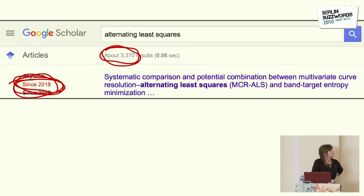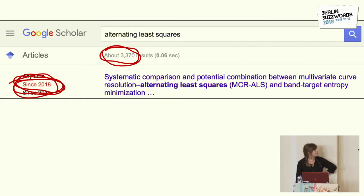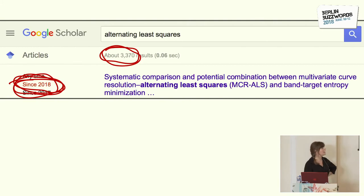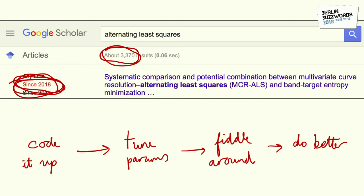In academia, the goal is publications. And in order to get a publication, you've got to do something that no one else has done before. One of the leading algorithms for recommendation engines is alternating least squares. If I do a Google Scholar search for papers on alternating least squares just this year, there's already over 3,300 of them. So doing something new isn't an easy feat. But if I was going to, I'd probably follow a flow chart, and at some point say: I've done better than what came before. I'd run my algorithm on a static data set that someone else had used in their paper and show a reduction in error. Got myself a publication.